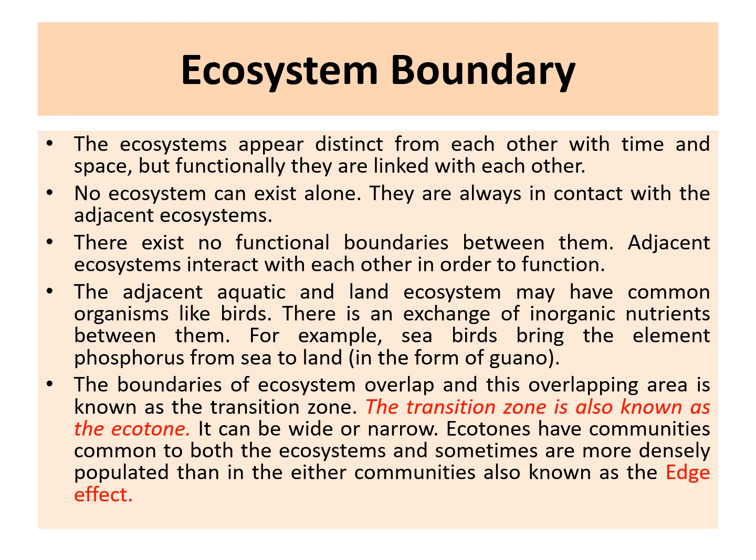The boundaries of ecosystems overlap, and this overlapping area is known as the transition zone, called the ecotone. The ecotone is the region where the boundaries of two or more ecosystems intermingle with each other. Ecotones have communities common to both ecosystems and are sometimes found to have even more densely populated plants and animals than either of the individual ecosystems — this phenomenon is known as the edge effect. The edge effect means that ecosystem boundaries contain even more organisms than either ecosystem does separately.